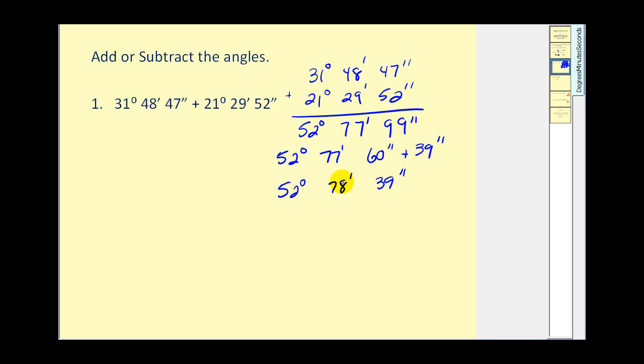78 minutes can be written as 60 minutes plus 18 minutes. And again, 60 minutes equals 1 degree. So our final answer would be 53 degrees. Remember, we get 1 degree from this. 18 minutes, 39 seconds.